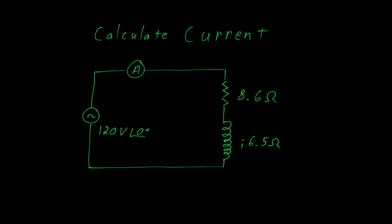This circuit consists of three parts. We have a source with 120 volts AC, we have a motor, and we have a current meter.